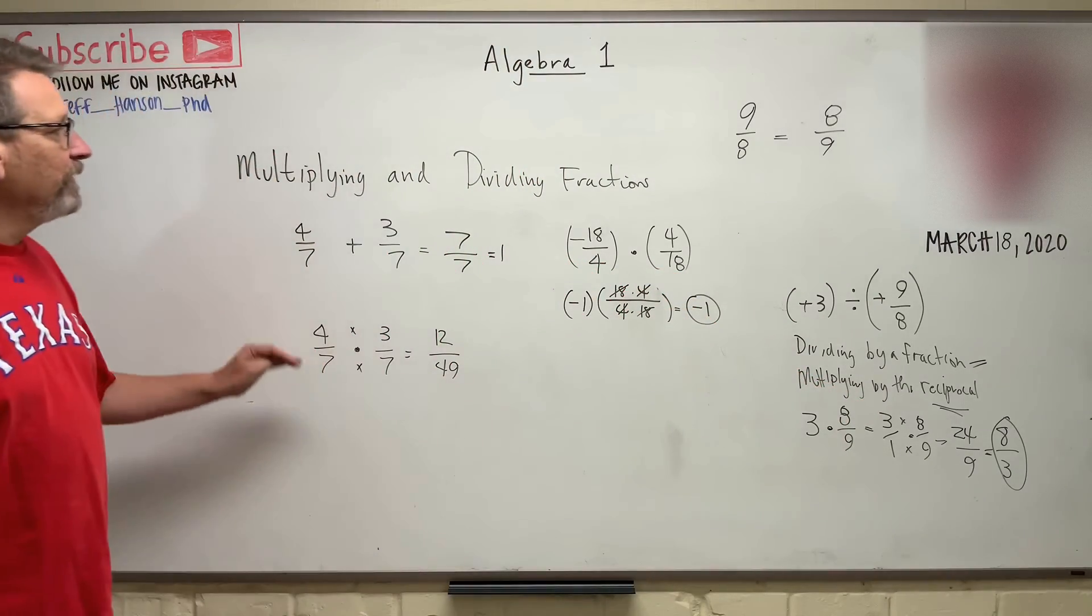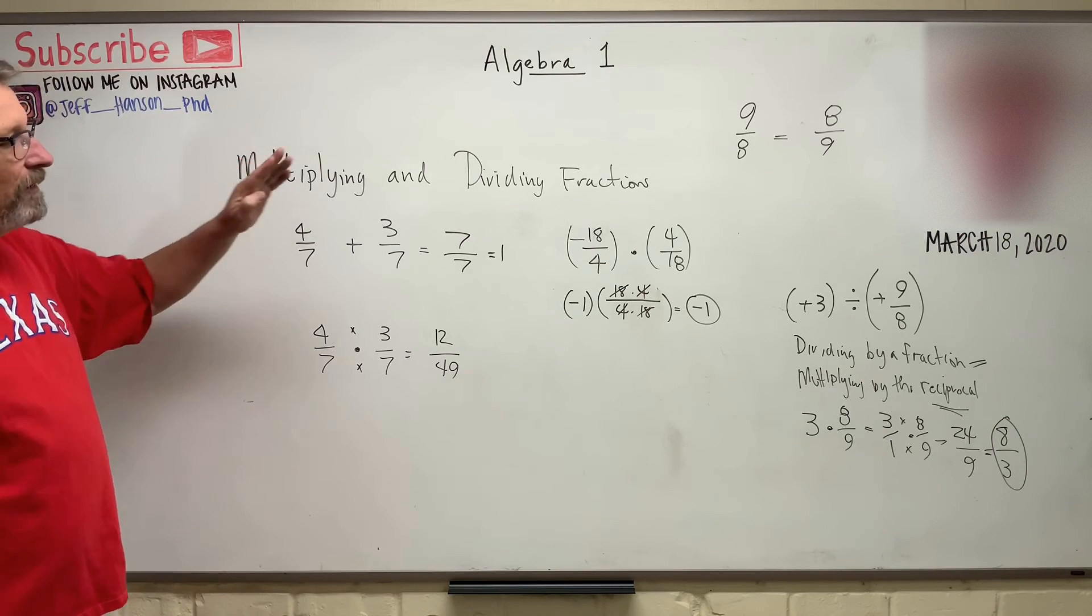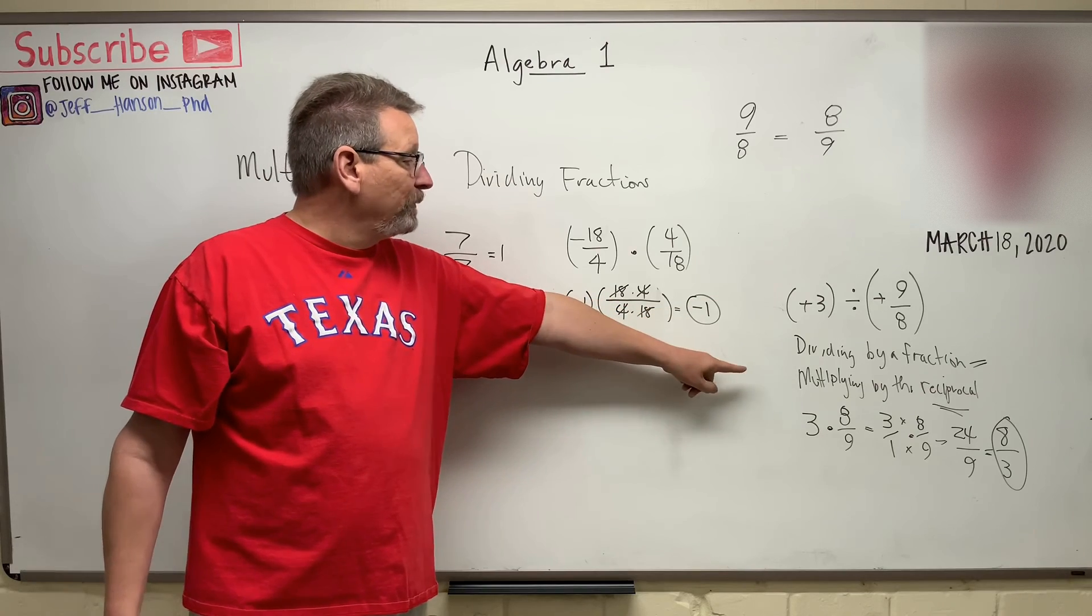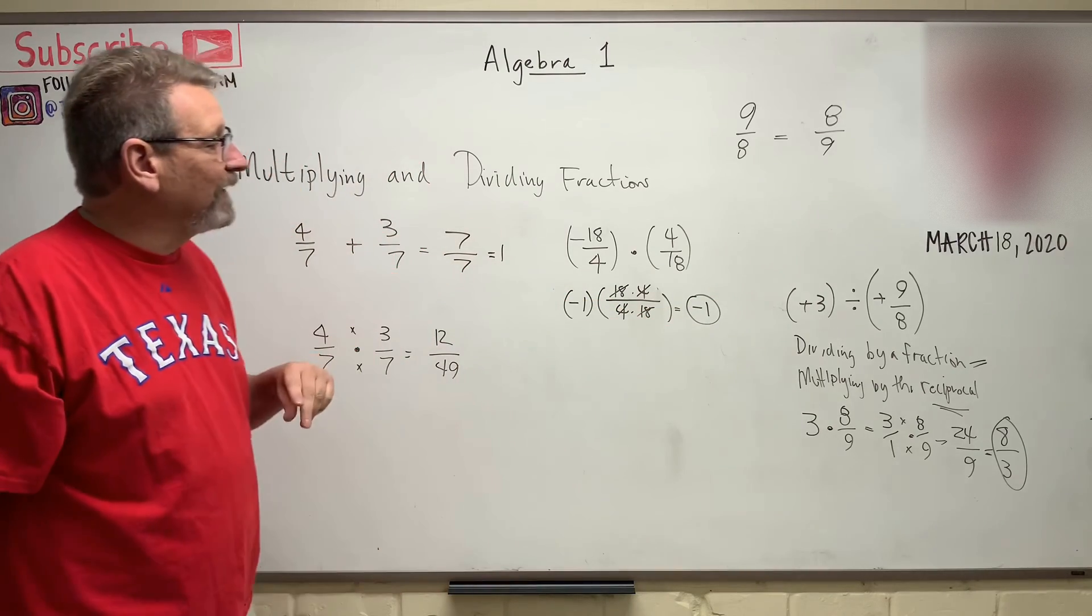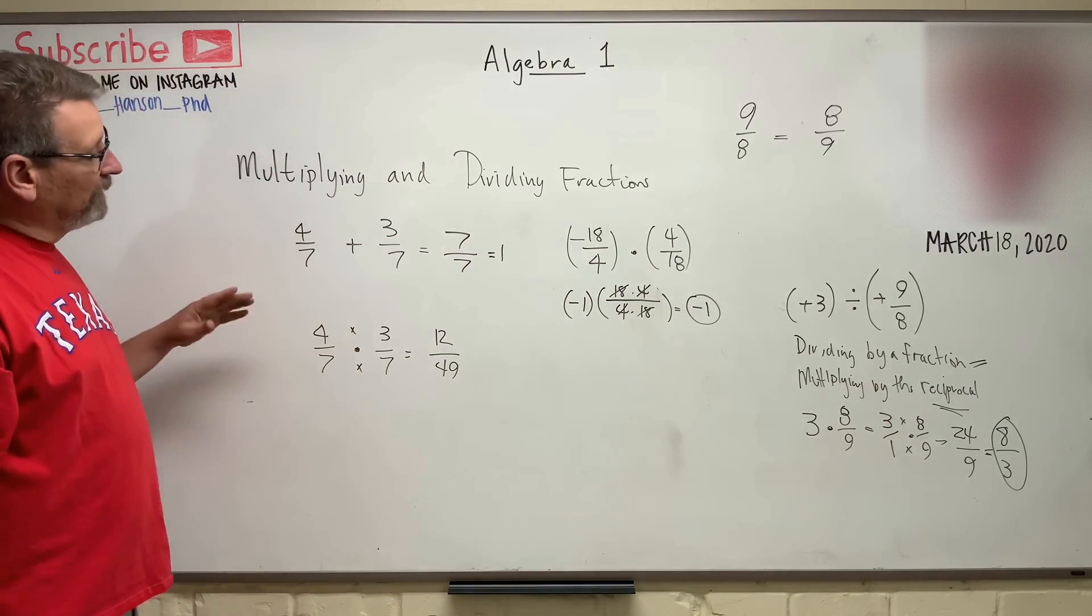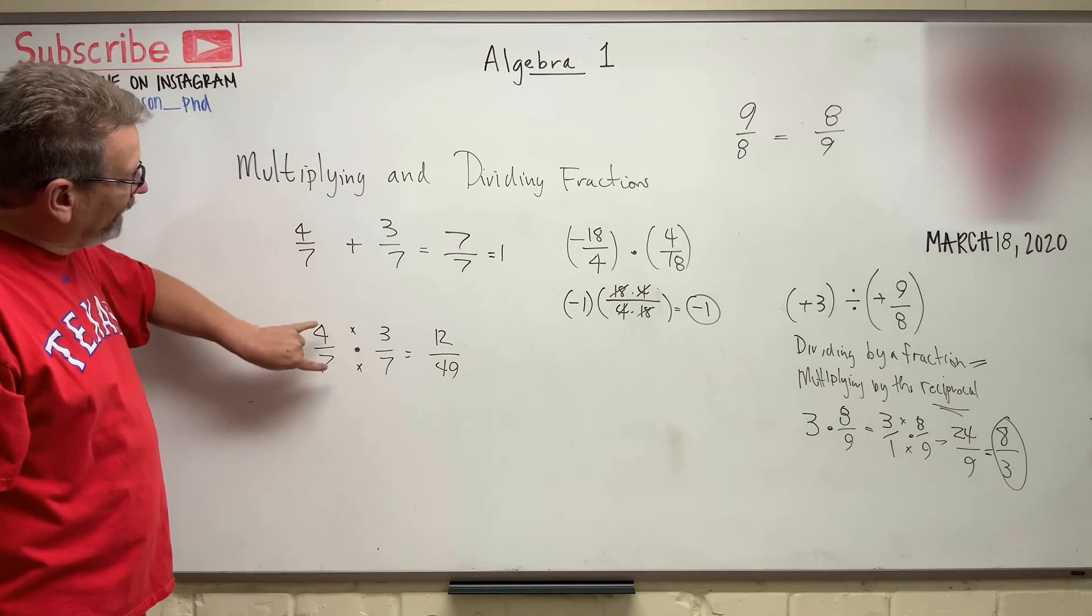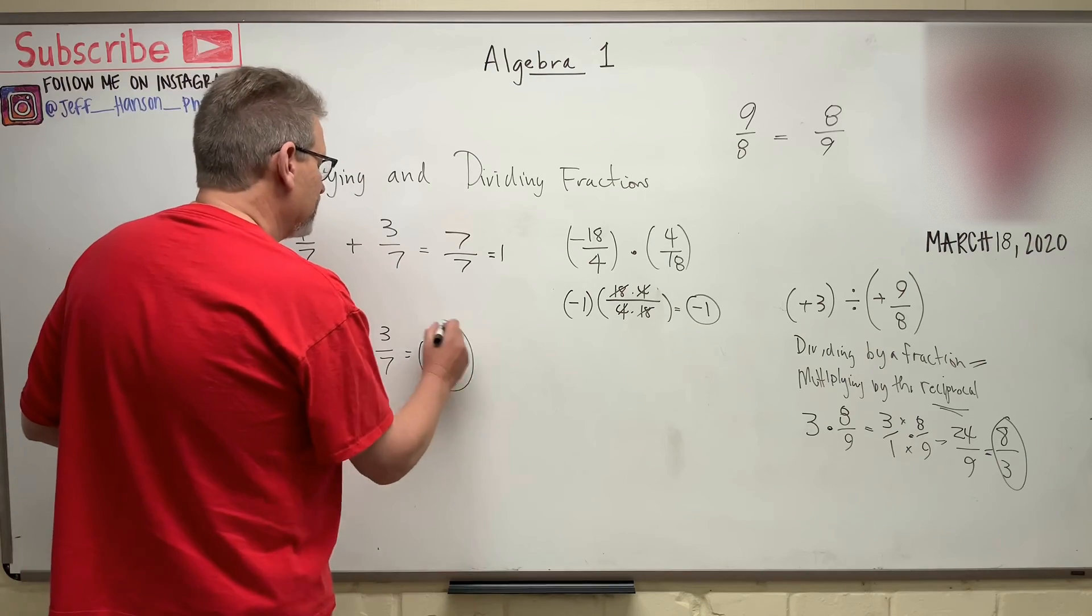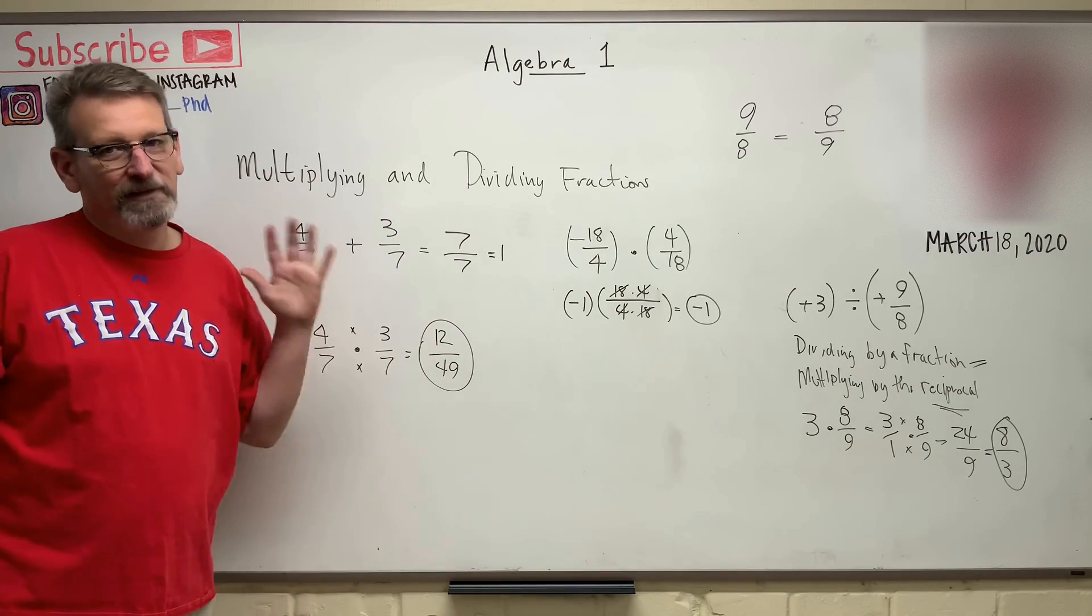So when you're multiplying and dividing by fractions, just remember, when you divide by a fraction, multiplying by the reciprocal is the same as dividing by a fraction. And then, you multiply the tops together and the bottoms together to get your result. Easy enough?